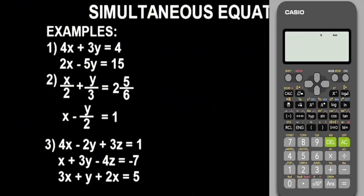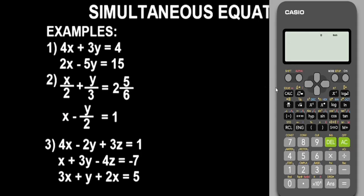So this is the Casio fx-991ES Plus second edition scientific calculator. If you observe here, you will notice that we have three questions to practice with. After solving these three questions with you in this video, you will be in a better position to tackle any problem involving simultaneous equations using this calculator.